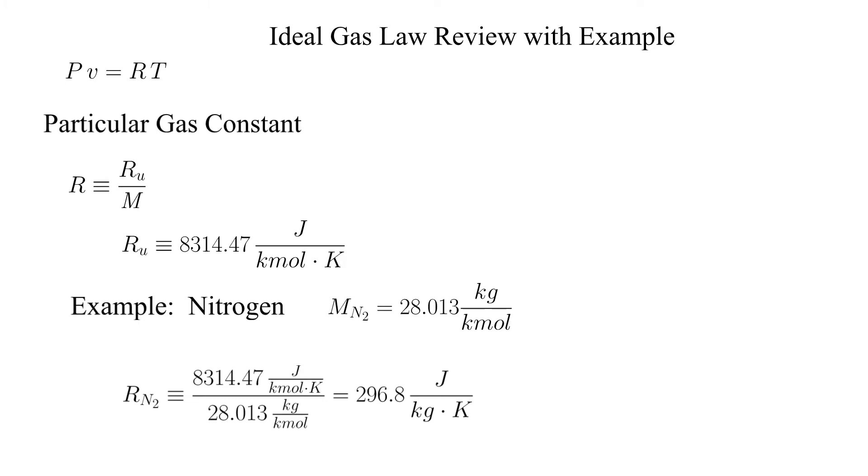In the example provided, the gas constant for nitrogen, N2, is equal to 296.8 joules per kilogram Kelvin. We will be using this constant later when we work through the illustrative example.